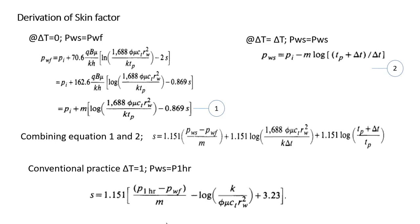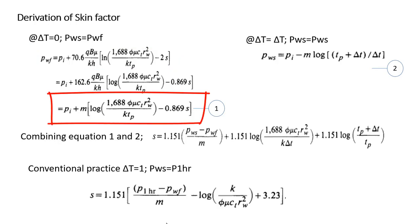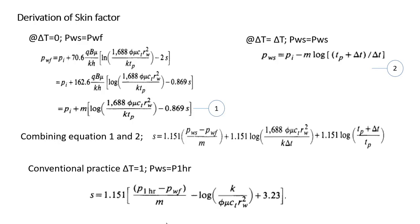Another important factor, apart from permeability estimation from this well test data, is the estimation of skin. There are two equations. The first equation is derived from the assumption that just before the well was shut in, the flowing pressure pwf is written as pi plus 70.6 qμB/kh × [ln(1688) — applying the ln approximation — minus 2S because the skin effect is there]. Written in terms of slope m, that equation becomes pi + m × log[1688 φμct rw² / k tp] − 0.869S.